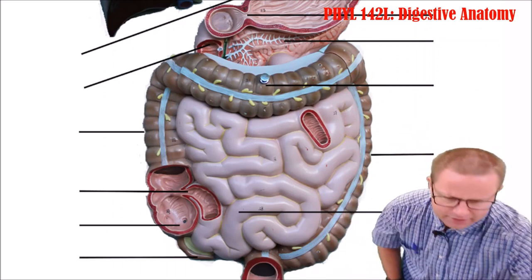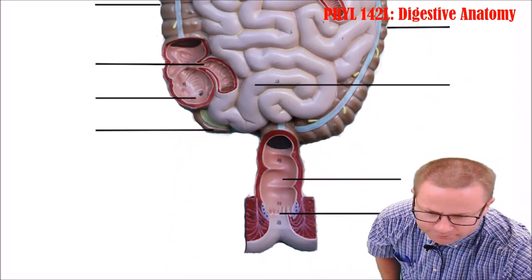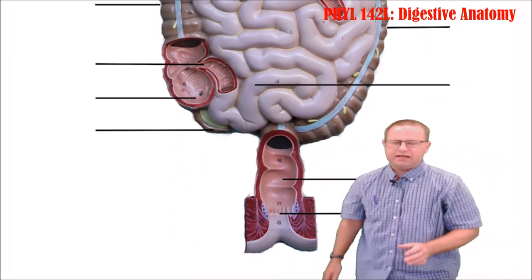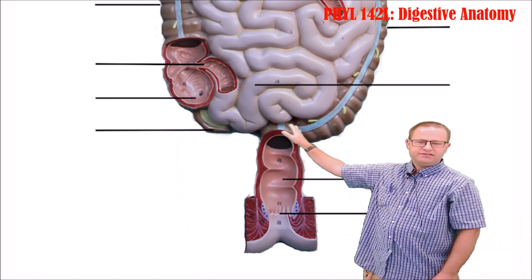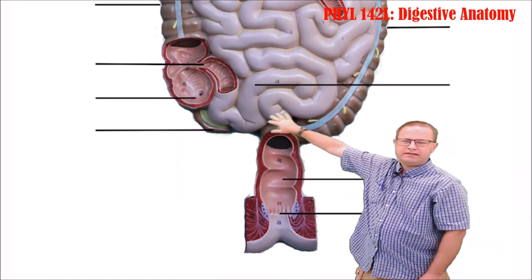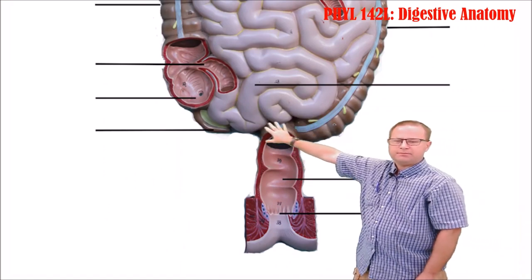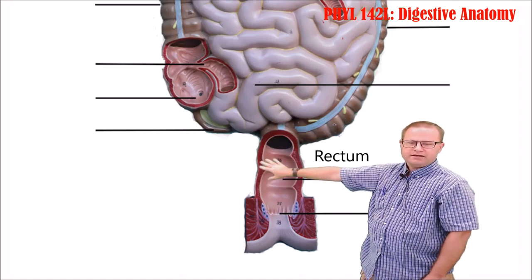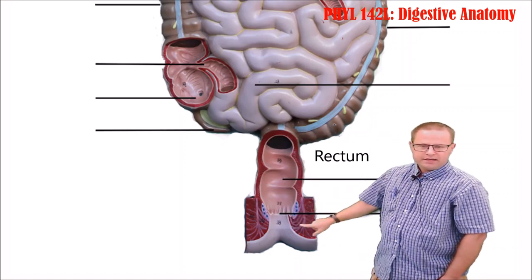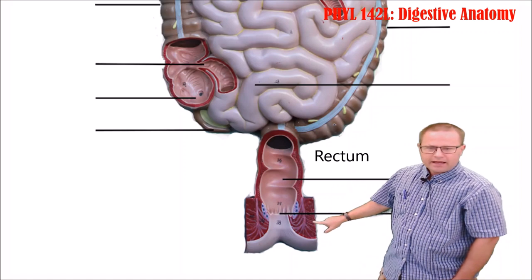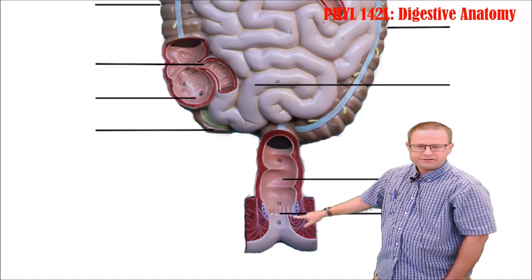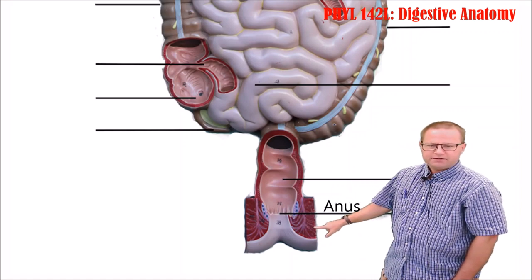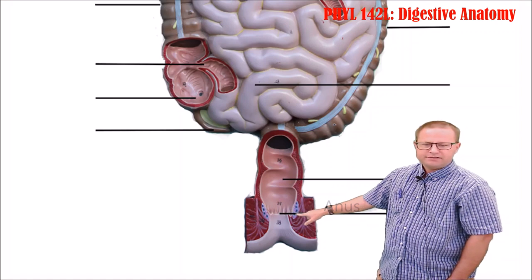Going down further, we can see the rectum and the anus. The sigmoid colon is back behind as an S-shaped structure, then we have the rectum and the anus. There are external and internal anal sphincters — the external anal sphincter is skeletal muscle, and the internal anal sphincter is involuntary smooth muscle.